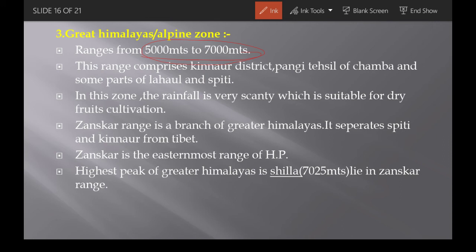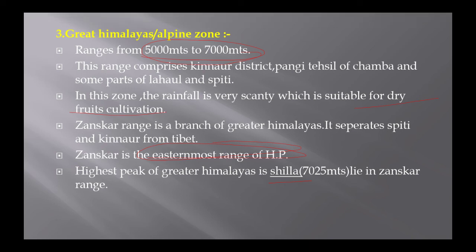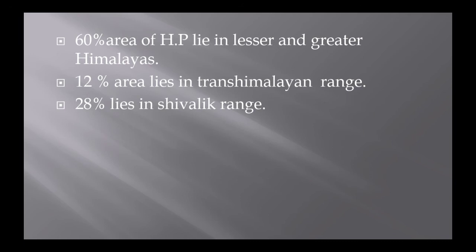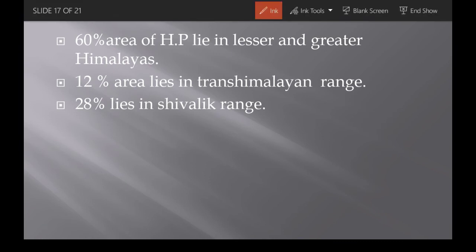In the Great Himalayan zone, rainfall is very low and dry fruit cultivation is very good. The Zanskar Range is an extension of the Great Himalayas and separates Spiti in the north from Tibet. Zanskar Range is the easternmost range of HP. The highest peak is Shilla. 60% of HP's area lies in the lesser and greater Himalayas, 12% in the trans-Himalayan range, and 28% in the Shivalik range.